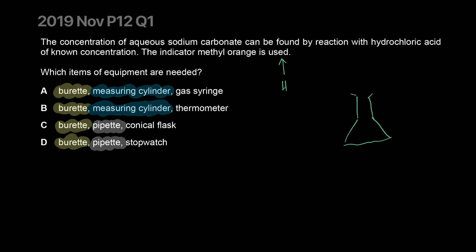You have a conical flask with your sodium carbonate, and you keep adding acid from a burette. There's also some indicator - methyl orange - in the solution. The methyl orange will change color in an acidic solution. You put acid in, but the acid tries to change the color of the methyl orange - however it's neutralized by the carbonate as it reacts. Carbon dioxide gas is given off, so the color won't change yet.